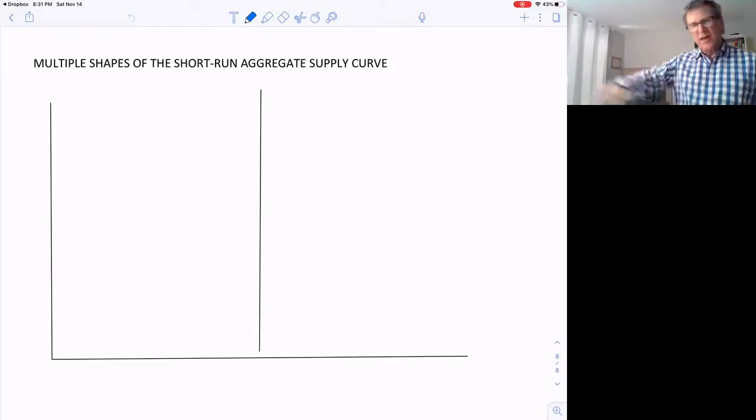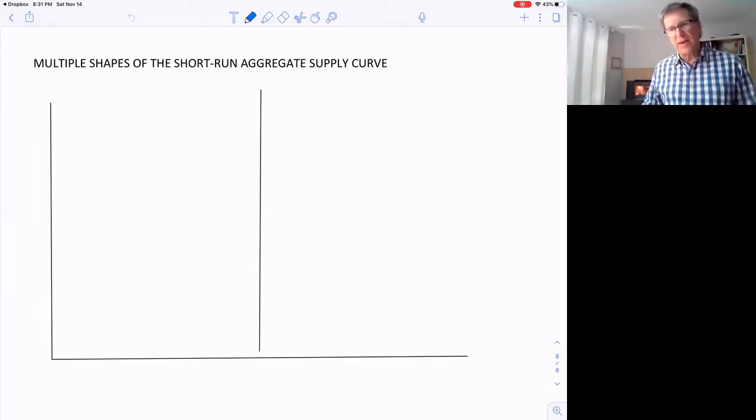We've been drawing it as just a straight line, but it probably isn't just a straight line. So here's the model: inflation on the vertical axis, output. The long run aggregate supply curve is vertical at potential output.